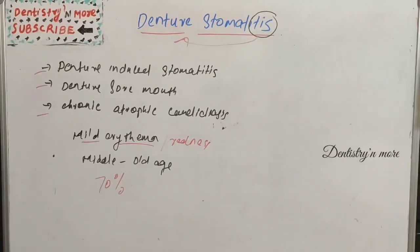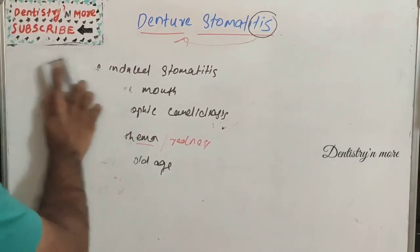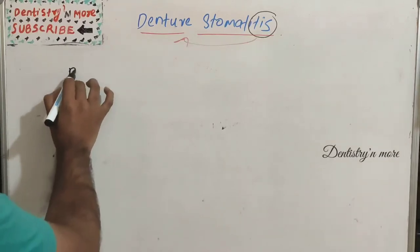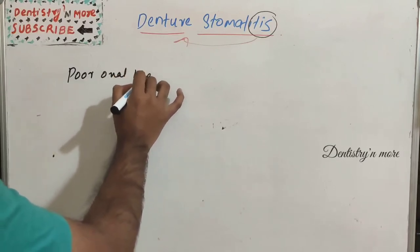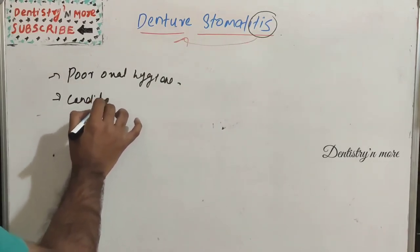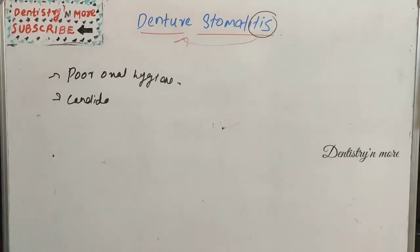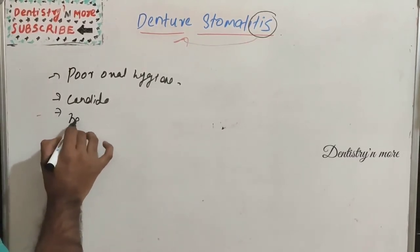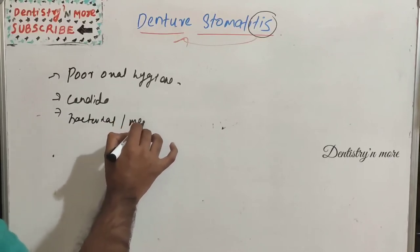Other predisposing factors include impaired salivary flow, dry mouth, diabetes, and HIV. The etiology involves changes in the oral environment due to complete or removable dentures, such as poor oral hygiene, leading to the presence of Candida species. It can also occur due to mechanical irritation and bacterial infections.